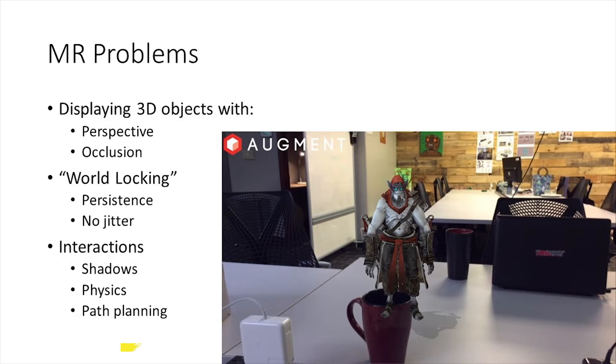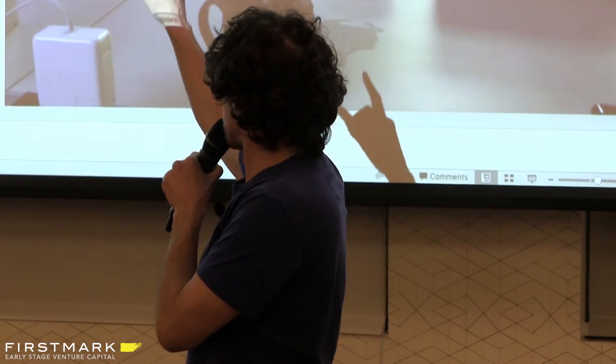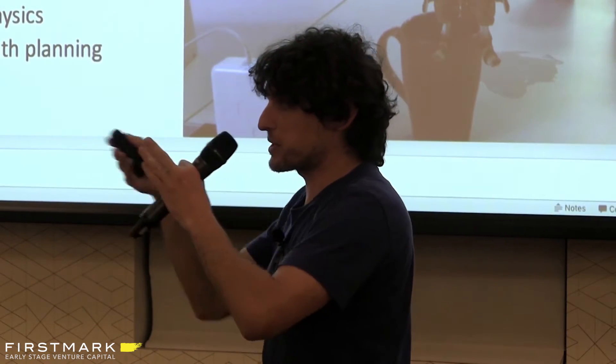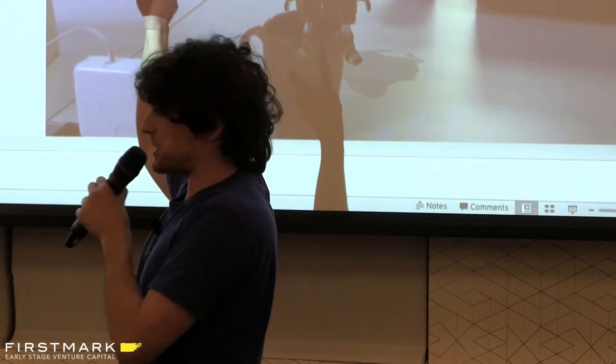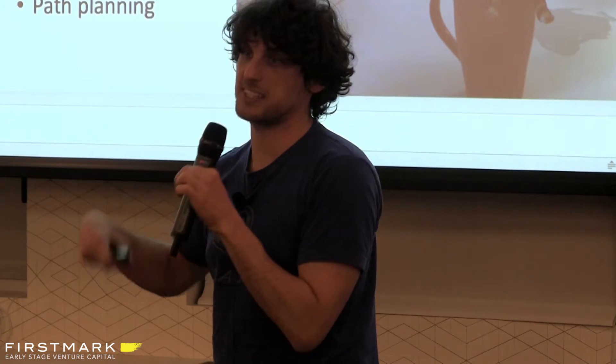So fundamentally, when we want to mix virtual objects, holograms if you will, into the physical space with us, there's a few considerations that we need to take into account. One is the actual display of the object needs to have correct perspective and occlusion. And what I mean by that is, if you look at this example, it's from an iPhone app you can download from a company just called Augment. They have a very nice app where they can stick virtual objects, in this case it's a little troll, onto the desk with you. But you can notice this little character is not standing on the desk. There's no perspective like you would expect from a video game. You can see he's not behind my cup of coffee there.